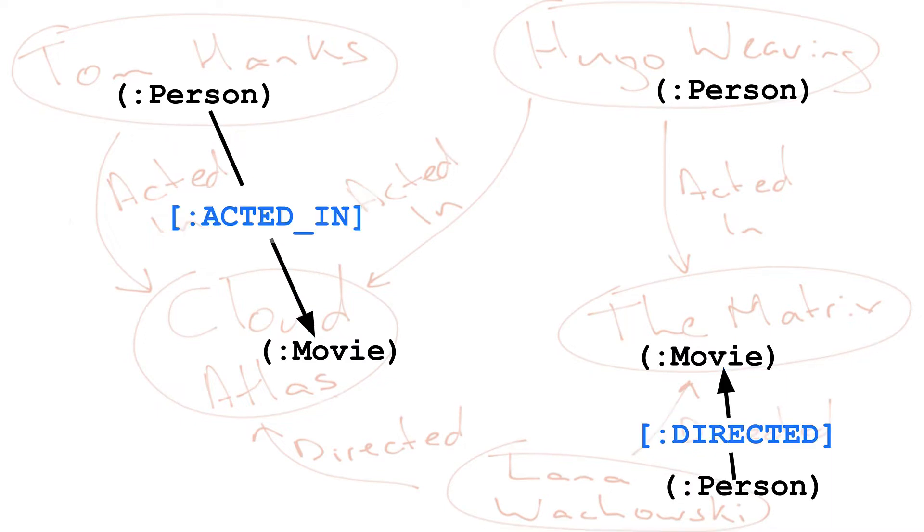In Cypher, we specify the relationship with the square brackets with a colon, relationship type. Here we see the acted in and directed relationship types.